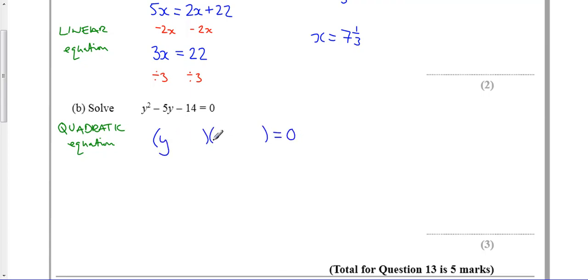I need y minus 7 times y plus 2, and then I know that either this thing is equal to 0, or this other bracket is equal to 0, because my total answer is 0.